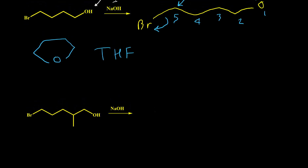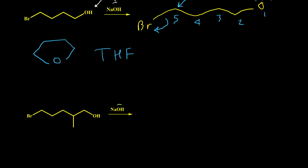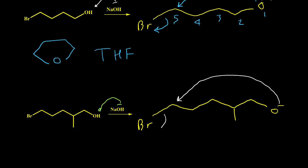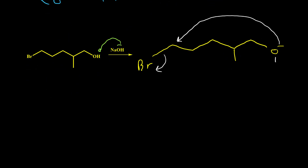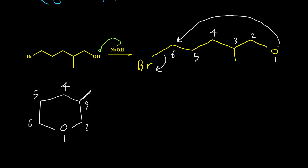Here is another example of internal Williamson ether synthesis. The OH takes the hydrogen to give an alkoxide anion, and then O-negative kicks bromine out of the structure. Numbering the atoms is especially useful when we have substituents: we get a six-membered ring with one oxygen atom, with a methyl group on carbon three and the remaining atoms as CH2 groups. By using halo alcohols we can perform internal Williamson ether synthesis, and the products are cyclic ethers.